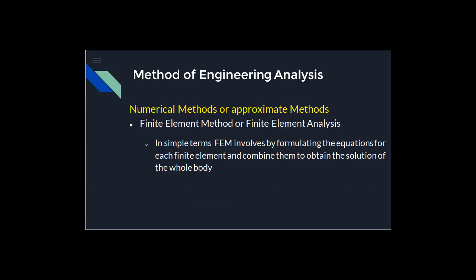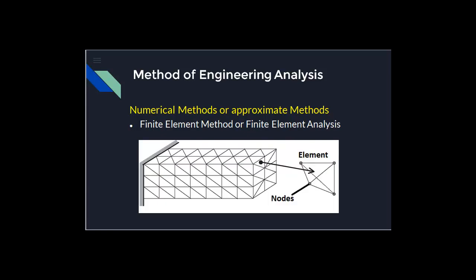In simple terms, the finite element method involves formulating equations for each finite element and then combining them to obtain the solution for the whole structure. To visualize how this works, take a small fixed beam. This fixed beam will be divided into smaller elements — shapes like triangles or quadrilaterals — each connected by means of joints called nodes. The properties of each element are identified, assembled, and the solution obtained for the whole structure.